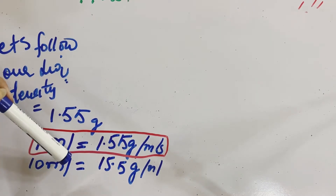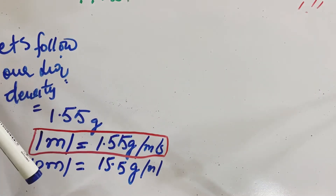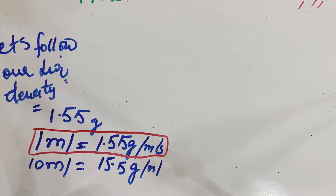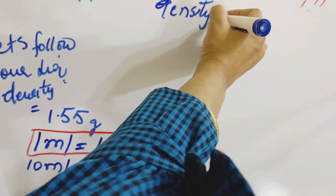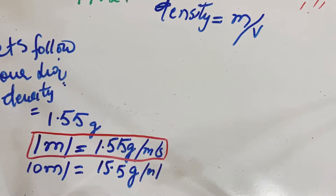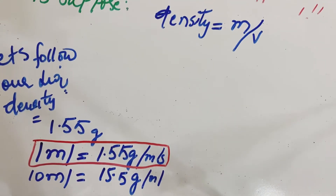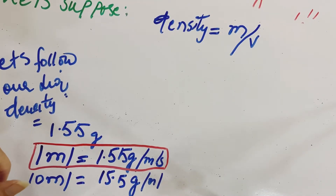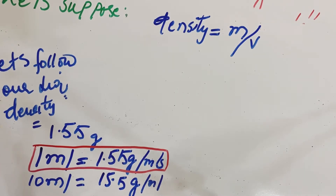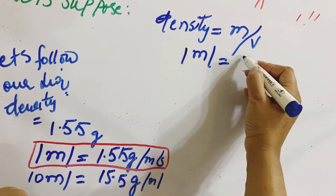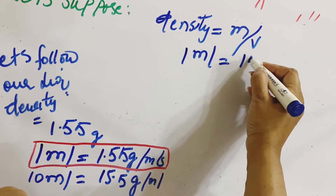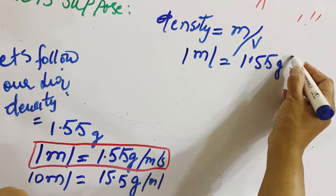So this tells us that 1 ml of that liquid has a mass of 1.55 grams, and 10 ml also has 15.5 grams of mass. As you know, density is directly related to mass and volume. The simplest definition is: density equals mass divided by volume. Now let's focus on our conversion factor, which is: 1 ml equals 1.55 grams per ml.